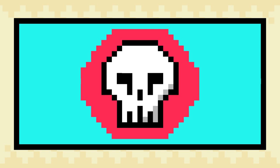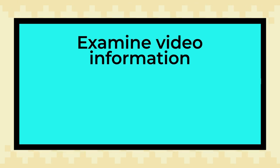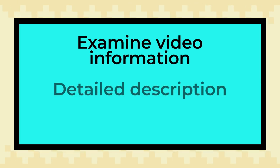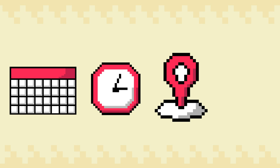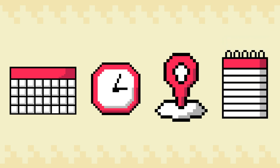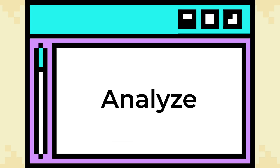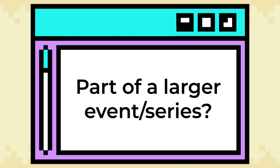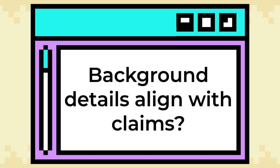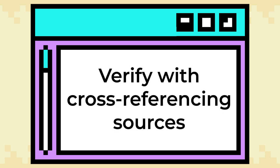Beyond what you can see in the video itself, examine the information provided alongside it. Look for a detailed description that includes critical information such as the date, time, location, and contextual information surrounding the footage. Analyze the broader context in which the video is shared — is it part of a larger event or series of events? Do the background details align with the claims being made? Verify this information by cross-referencing it with reliable sources elsewhere on the internet.